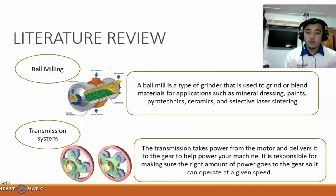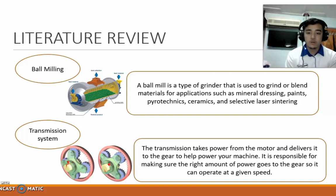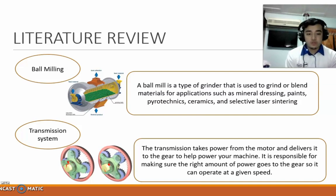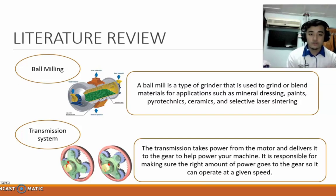Next, our literature review on ball milling. A ball mill is a type of grinder used to grind or blend materials for applications such as mineral dressing, paints, pyrotechnics, ceramics and selective laser sintering. For our transmission system, we chose an automatic transmission system which uses a planetary gear as shown in the slide. This transmission takes power from the motor and delivers it to the gear to help power the machine, ensuring the right amount of power goes to the gear so it can operate at a given speed.